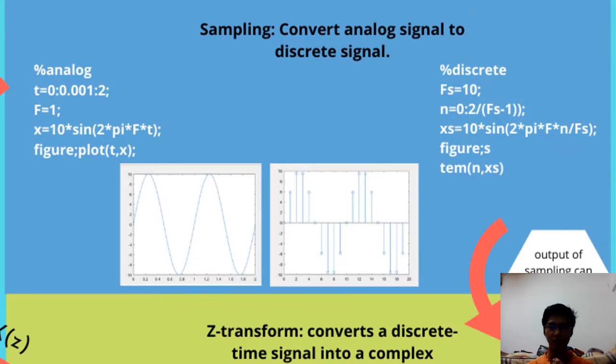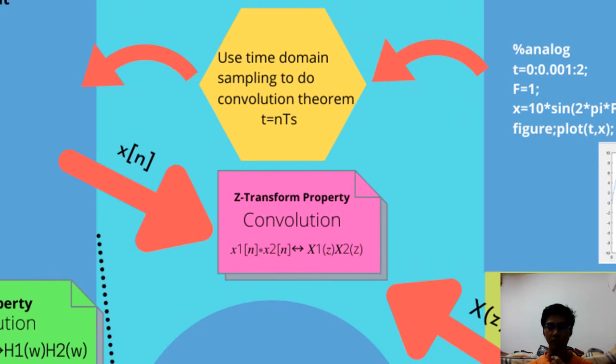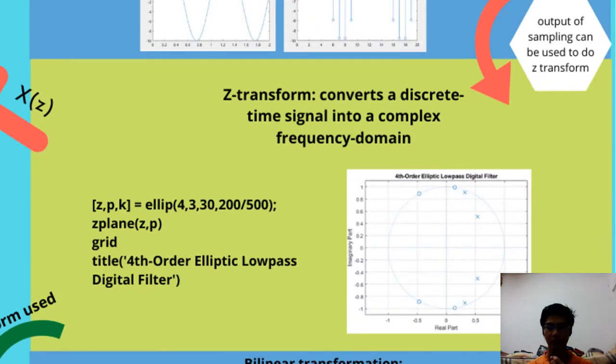Sampling methods convert analog signal to discrete signal by measuring the value of signal at certain intervals in time. Sampling is commonly used in convolution theorem. The discrete signal output from sampling method can then be used to do Z-transform, which converts it into a complex frequency domain,